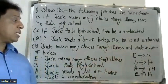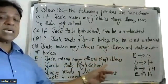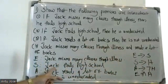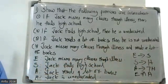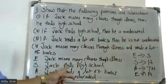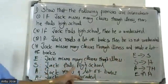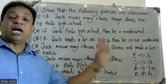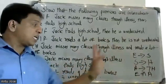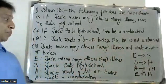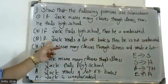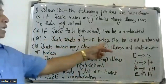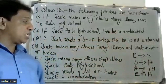Second premise: if Jack fails high school, then he is uneducated. Third premise: if Jack reads a lot of books, then he is not uneducated.